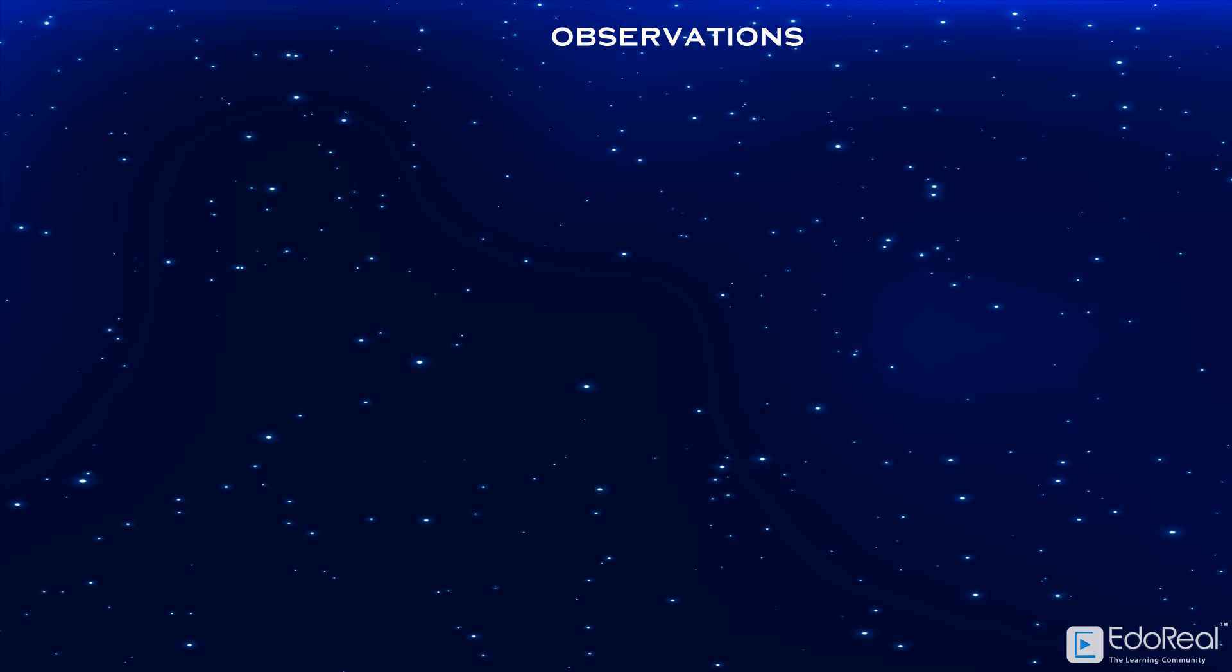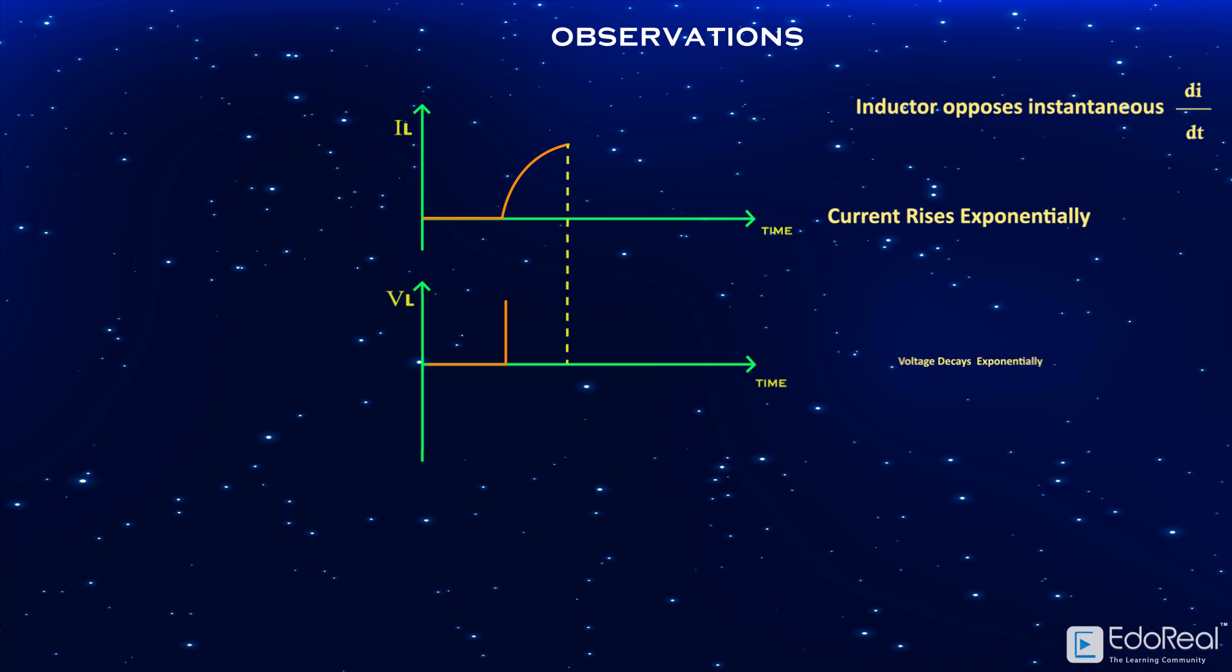We can observe from the above cases that the inductor opposes the instantaneous change in current. That is why current rises exponentially and voltage decays exponentially before reaching steady state. After reaching steady state, the current will be constant and voltage becomes zero.